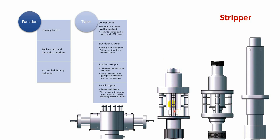If you want to have two side door strippers stacked above each other, you can assemble one above the other. This configuration is called a tandem stripper, as it is used in conjunction with another stripper.